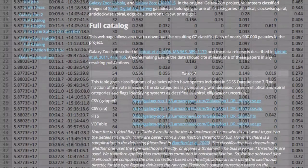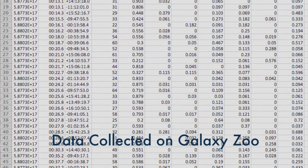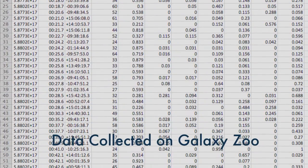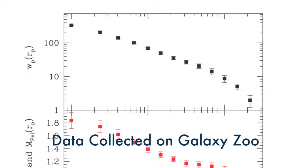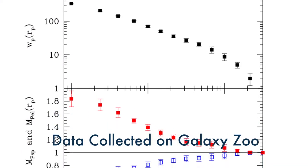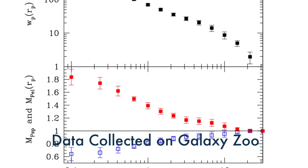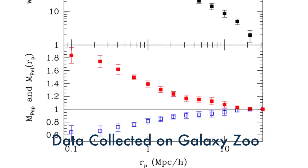Over the next few years, 250,000 people volunteered to classify galaxies on this website. The Galaxy Zoo has been around for eight years now.